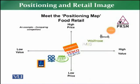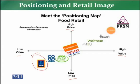Let me give you good examples. We have a positioning map of food retail stores. Two types of parameters are visible here: in terms of value — which is low value and high value — and in terms of price — which is low price and high price. For example, looking at the LD store, these stores fall in the low price and low value category, offering low price and low value to the customer.